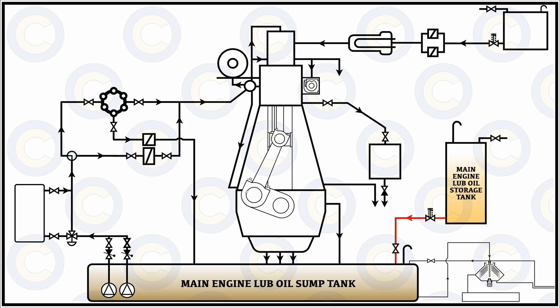From here, the main engine lube oil pumps — which are basically submersible type centrifugal pumps — will draw suction and then send this oil further. From here, this oil goes into the main engine lube oil cooler. On most ships, due to the sheer size and nature of the system, it will be sea water cooled, but on certain ships it can be fresh water cooled also.